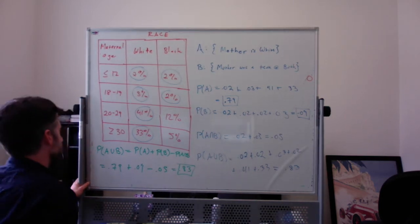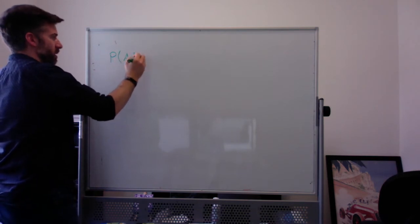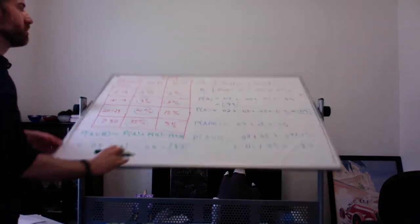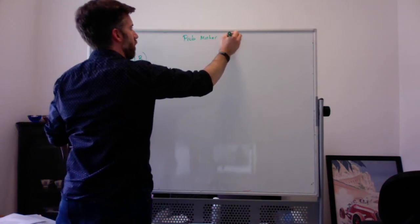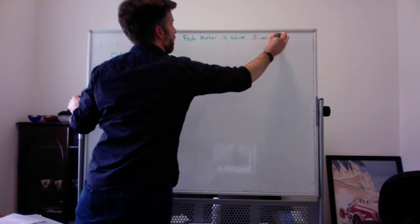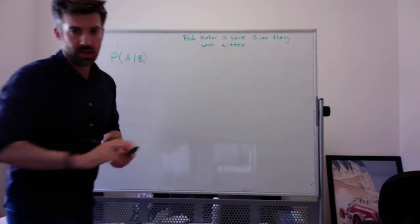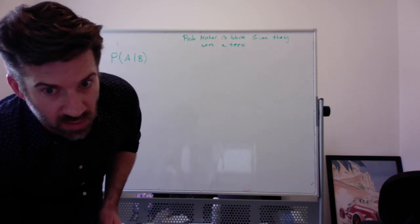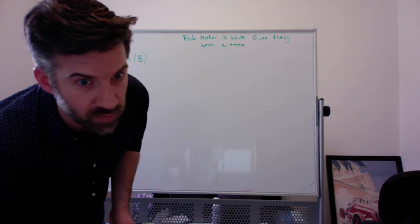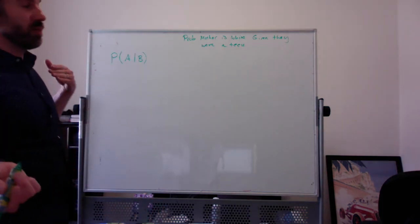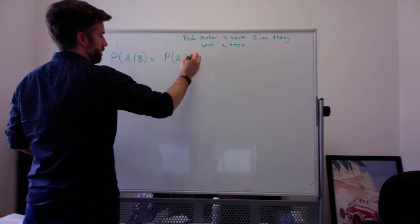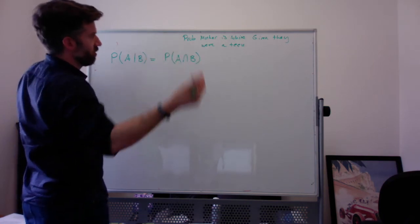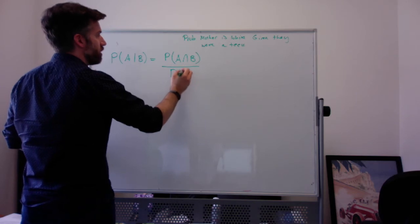Now, a couple other things we can answer. We can also ask, what's the probability of A given B? That is the probability that A is white, given they're a teenager. So the probability that the mother is white, given they were a teen. So the probability the mother is white, given they were a teen, is the probability that they were white and were a teen, that they were a white woman giving birth and that they were a teenager giving birth, divided by the probability of being a teen.